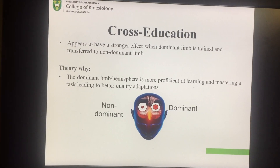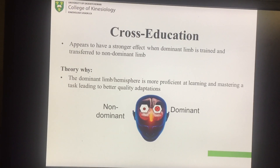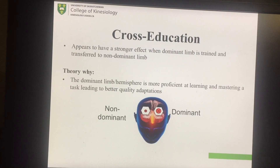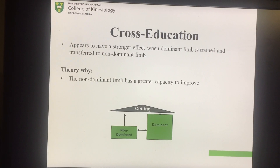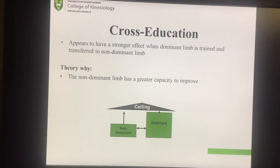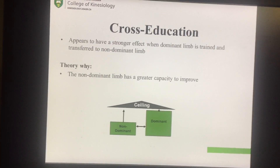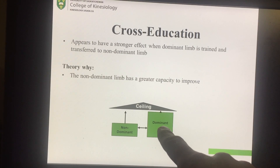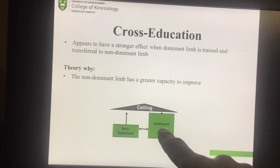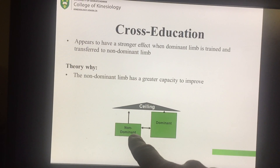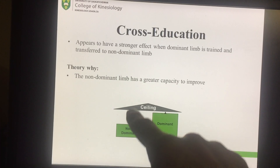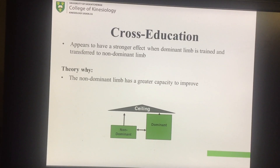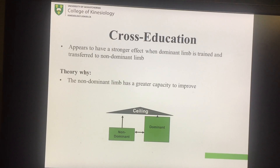Your dominant side is better at learning tasks, so you get a greater crossover from the dominant to the non-dominant side of the brain. Another theory is that the non-dominant limb starts off quite a bit weaker, so it has greater room for improvement — and maybe that's why you see the greater crossover effect.